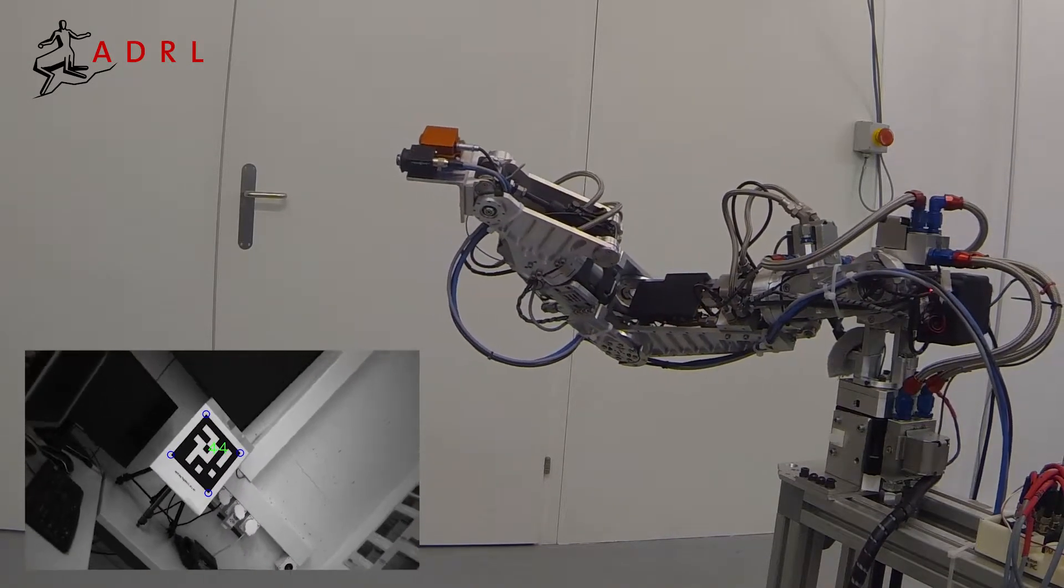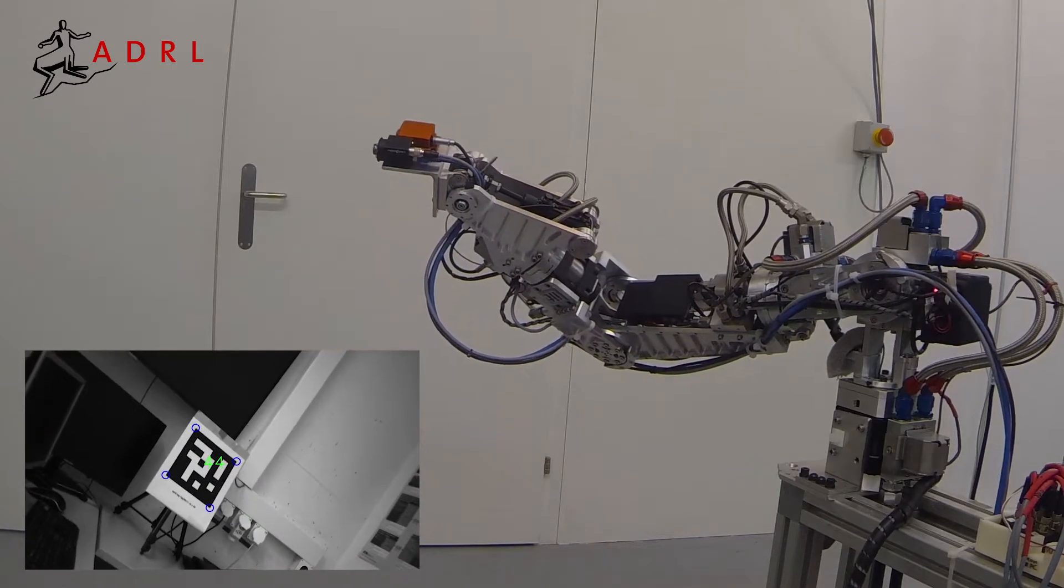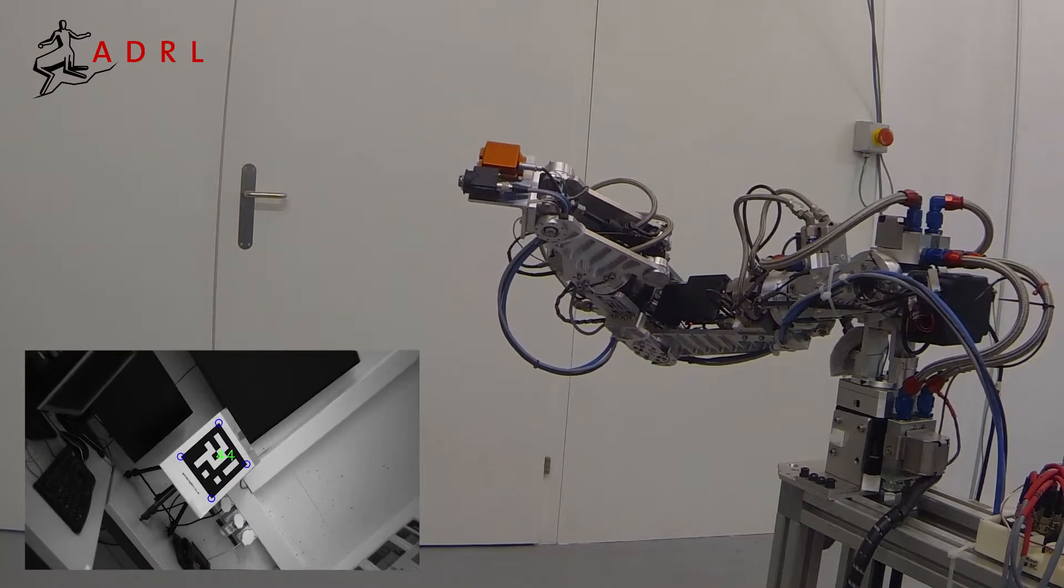Unlike conventional systems, ours does not use the pose of the base of the robot and the arm odometry in feedback, but only the visual inertial motion estimate.